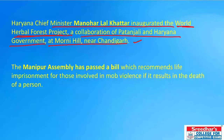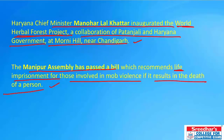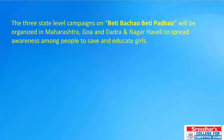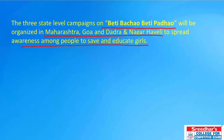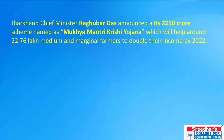The Manipur Assembly has passed a bill recommending life imprisonment for people involved in mob violence resulting in death. Three state-level campaigns on Beti Bachao Beti Padhao will be organized in Maharashtra, Goa, and Dadra and Nagar Haveli to spread awareness about saving and educating girls. Jharkhand Chief Minister has named a scheme as Mukhyamantri Krishi Aashirwad Yojana — a ₹2,250 crore scheme under which 22.76 lakh medium and marginal farmers will double their income by 2022.